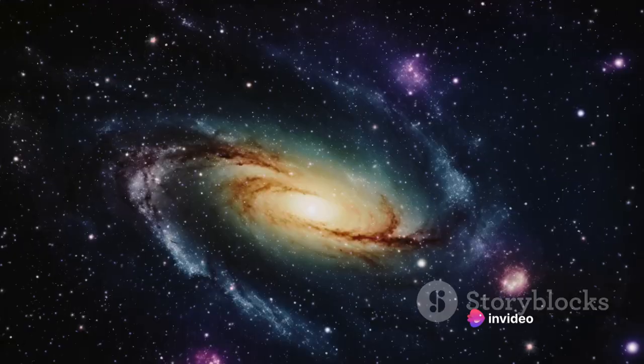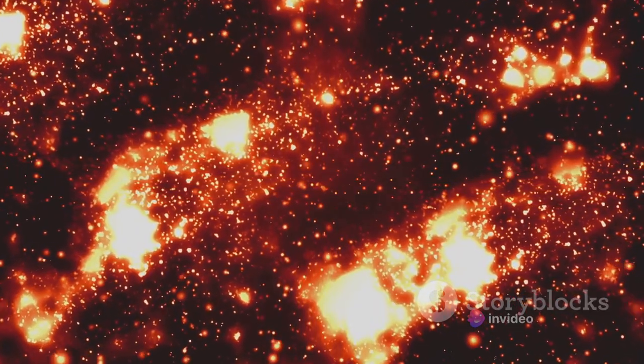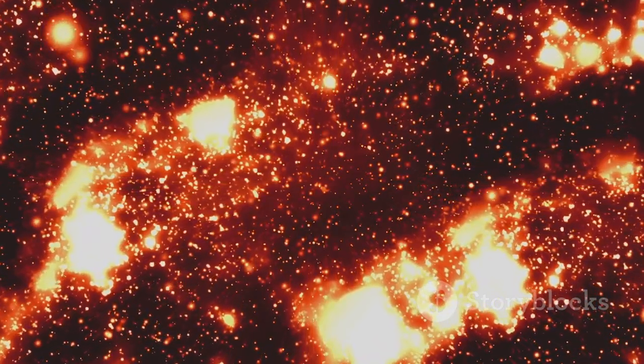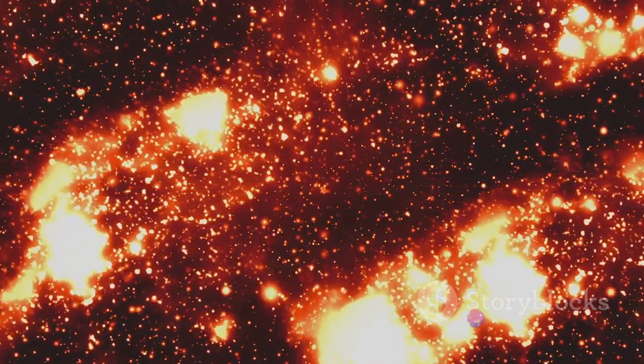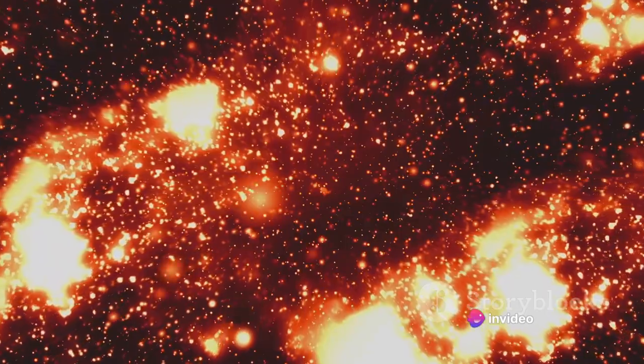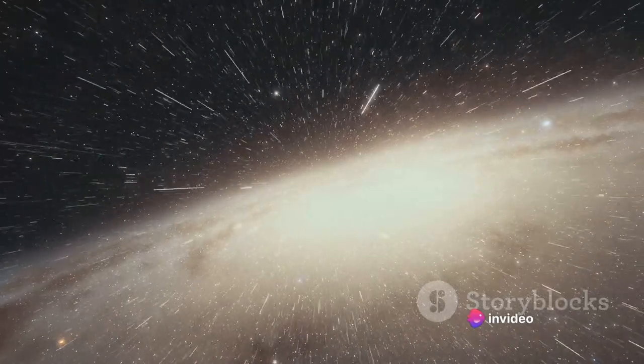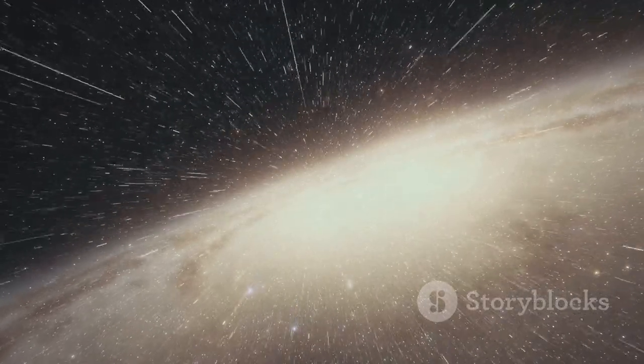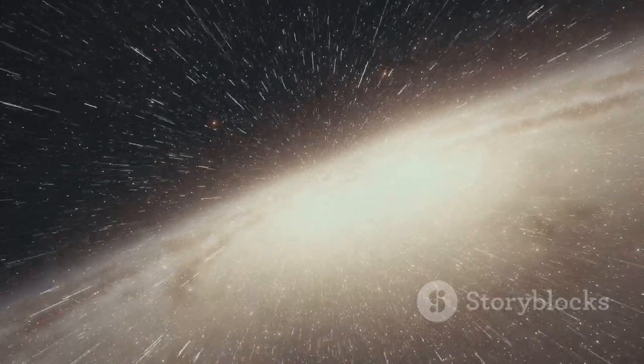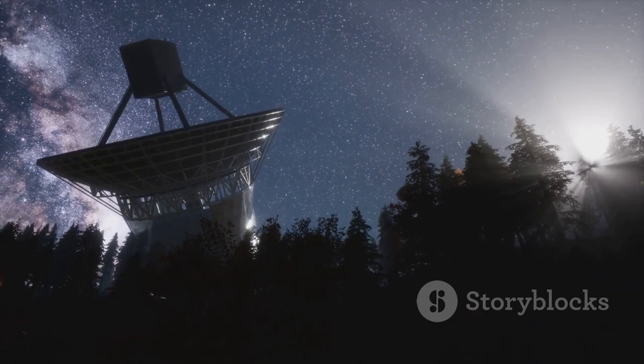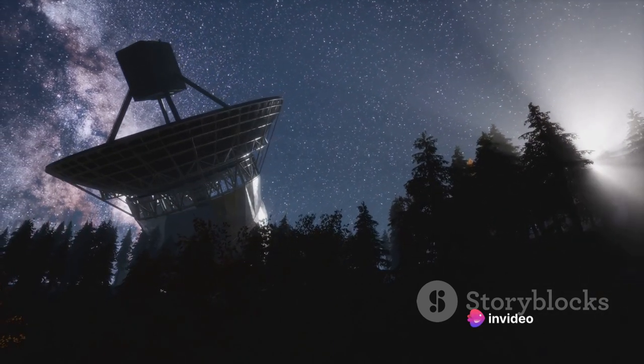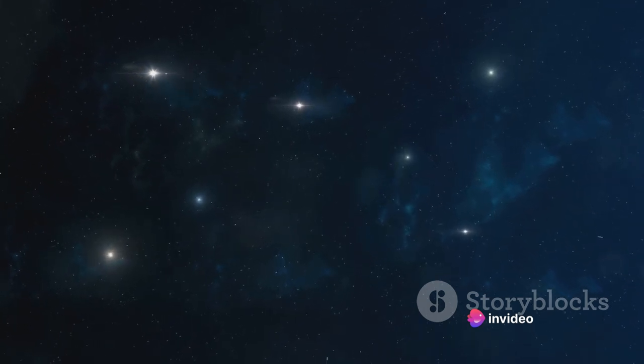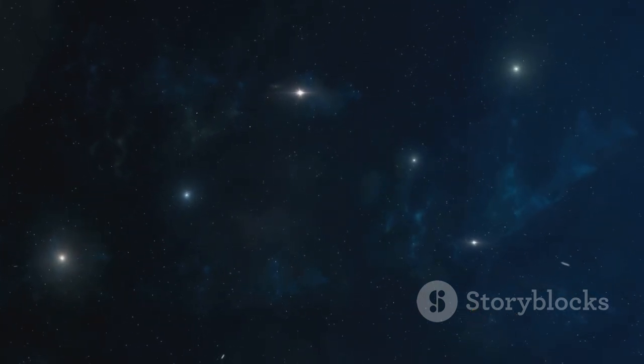The universe is not static, it's expanding. And the farther away an object is, the faster it's moving away from us due to this cosmic expansion. This means that some parts of the universe are moving away from us faster than the speed of light. And since nothing can travel faster than light, those parts of the universe are forever out of our view. The speed of light itself also complicates things. When we look at a star that's a billion light years away, we're seeing it as it was a billion years ago. We can't see it as it is right now. So, in a way, we're always looking at a universe that no longer exists.